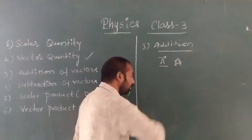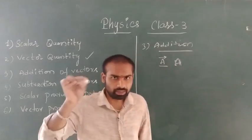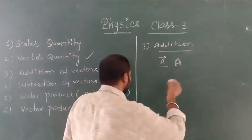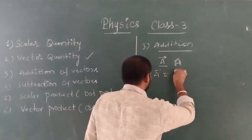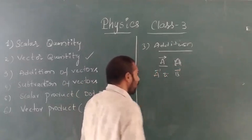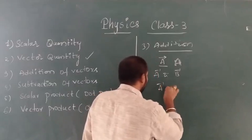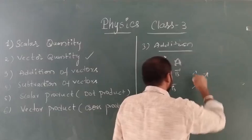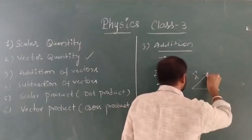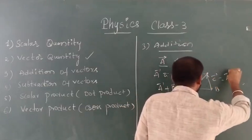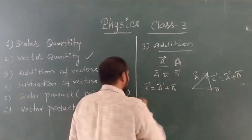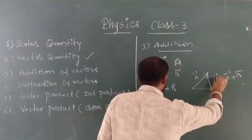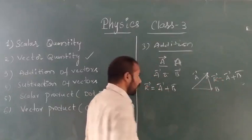Any vector is represented by an alphabet with an arrow. In addition of vectors, we take two vectors A-bar and B-bar. The resultant vector C-bar will be A-bar plus B-bar, so C-bar equals A-bar plus B-bar. Or if we take the resultant as R, resultant vector R-bar equals A-bar plus B-bar.